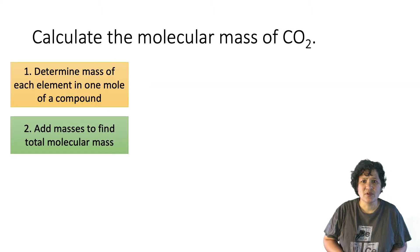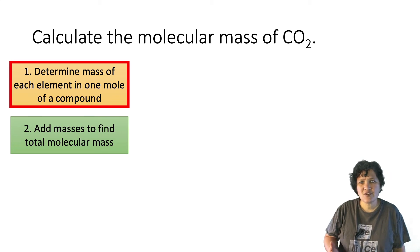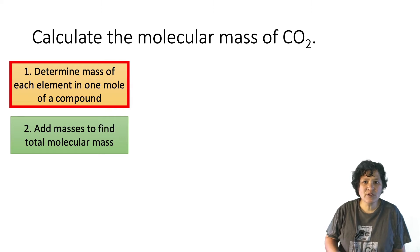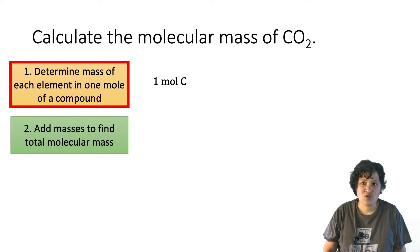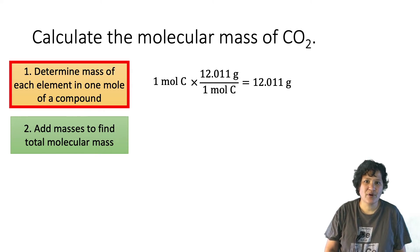Let me show you an example. We're going to find the molecular mass of carbon dioxide, or CO₂. In the first step, we find the mass of each element in one mole of compound. Because there's only one carbon atom per CO₂ molecule, each mole of CO₂ will contain one mole of carbon. The molar mass of carbon is 12.011 grams per mole, which means that each mole of CO₂ will contain 12.011 grams of carbon.